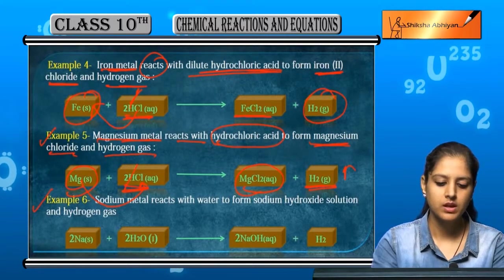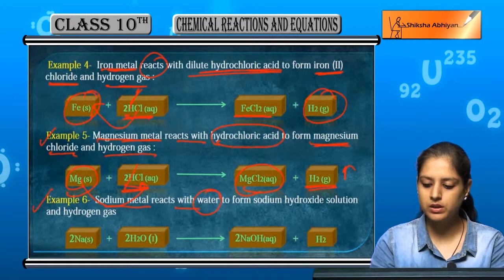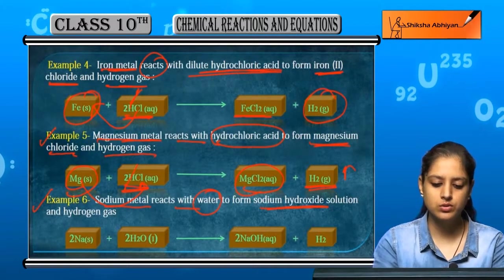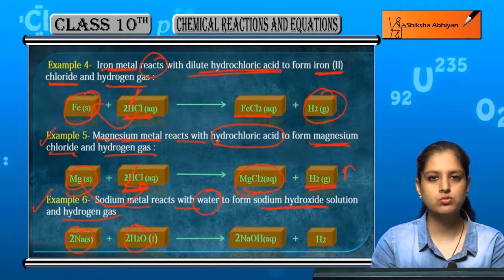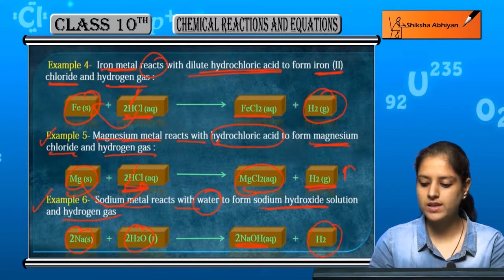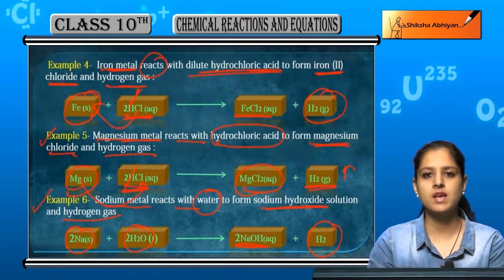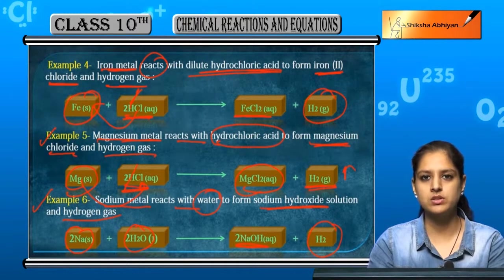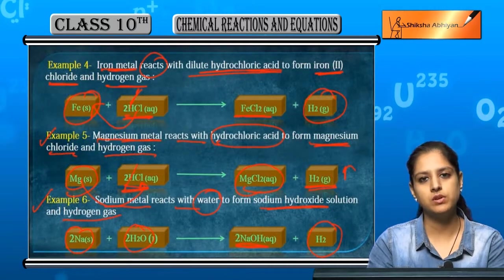For example, sodium metal reacts with water to form sodium hydroxide solution and hydrogen gas. Na plus H2O forms NaOH plus H2. These were some examples of displacement reaction. Let us now move on to another type of reaction, that is double displacement reaction.